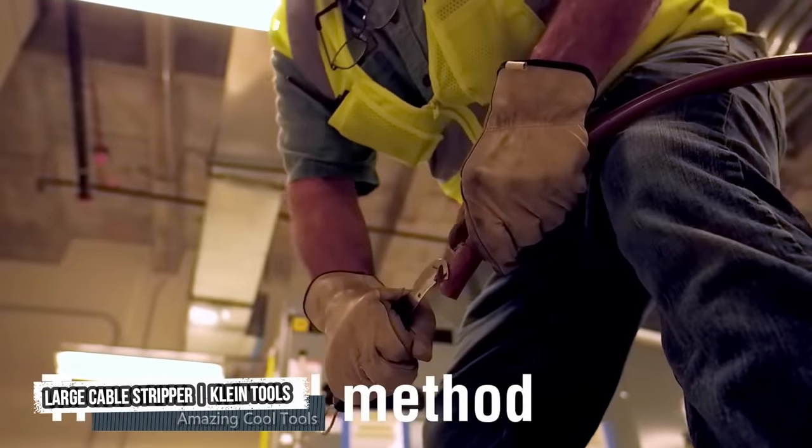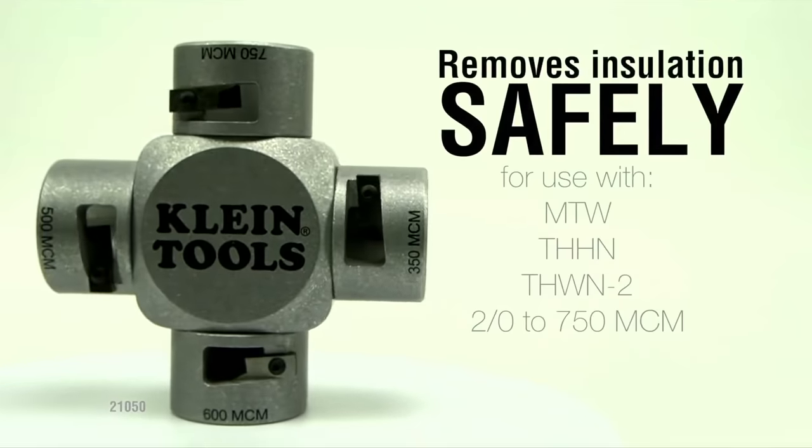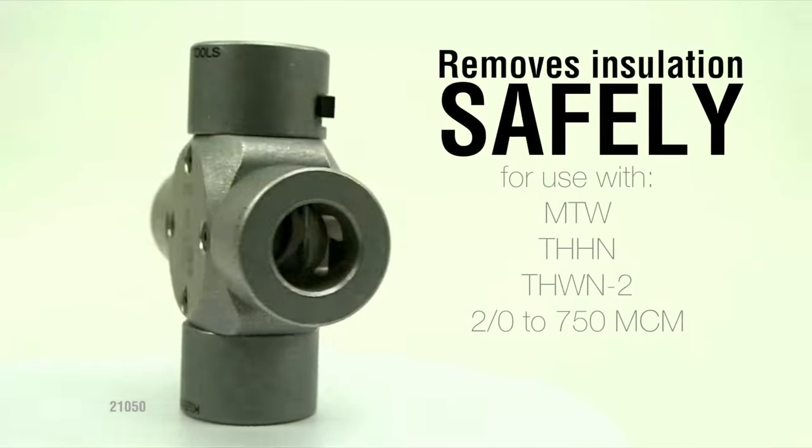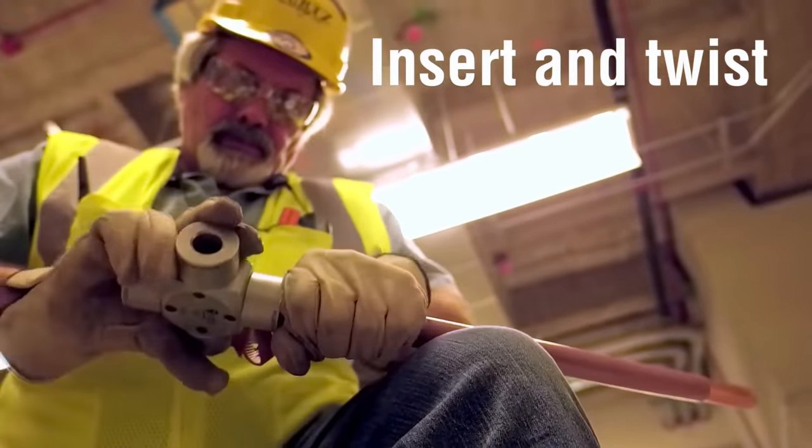The traditional cable stripping involves a knife to score and then skim the cable jacket. Klein's new cable stripper safely removes insulation without nicking the wire. Simply insert the cable and twist for a precise cut every time.